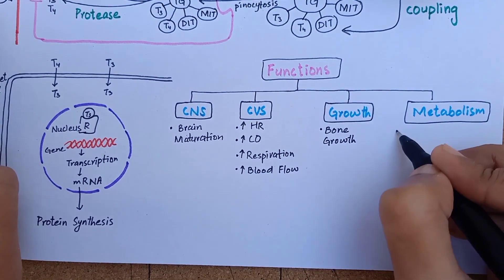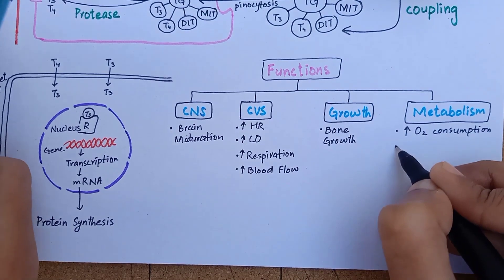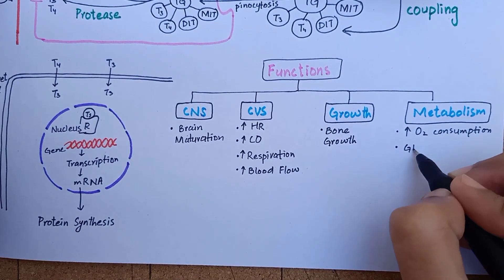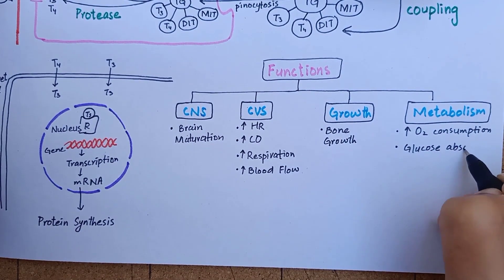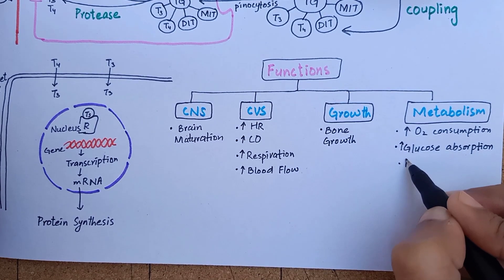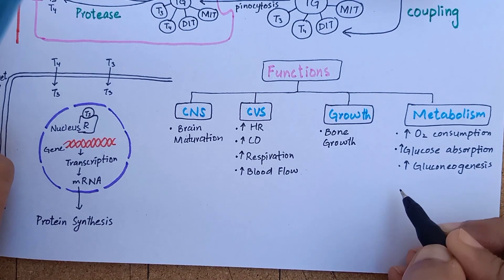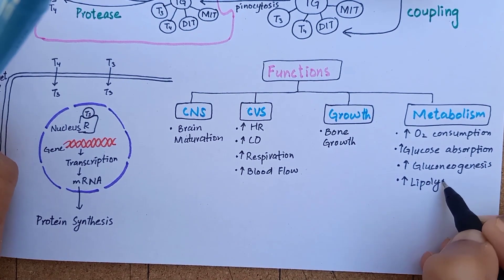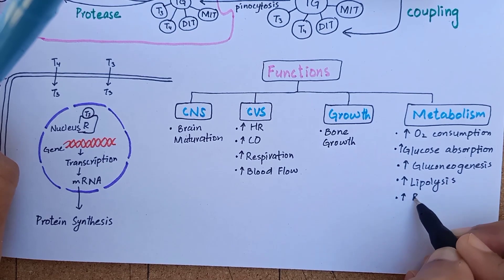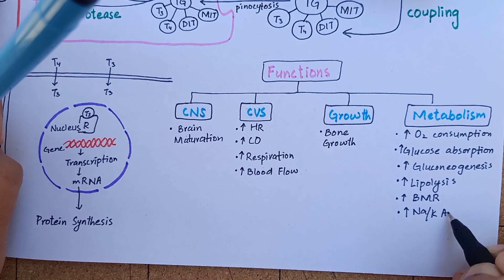By increasing the metabolism, it causes increased oxygen consumption by our body. It increases glucose absorption, especially during the time of starvation. It increases the process of gluconeogenesis and increased lipolysis. It increases the basal metabolic rate and it increases the sodium-potassium ATPase activity.